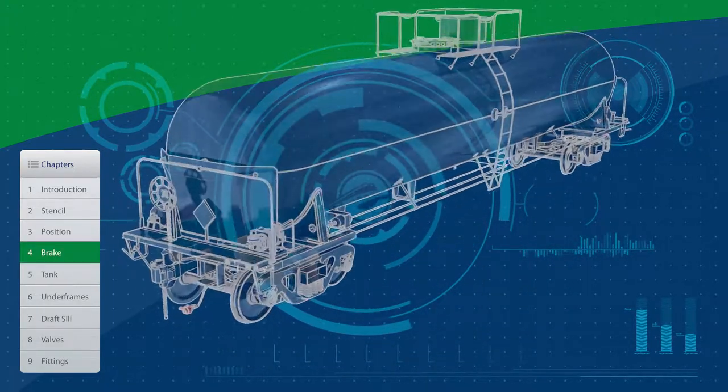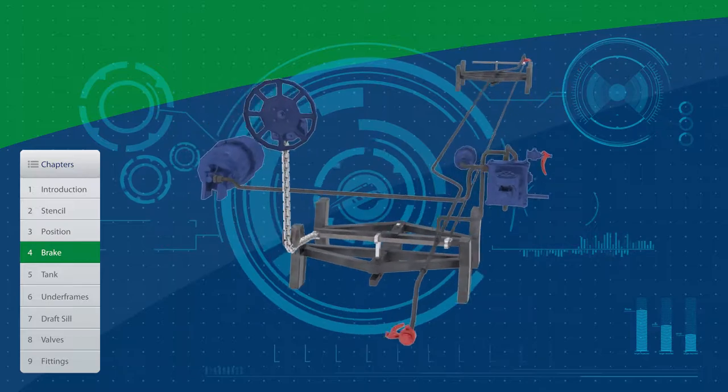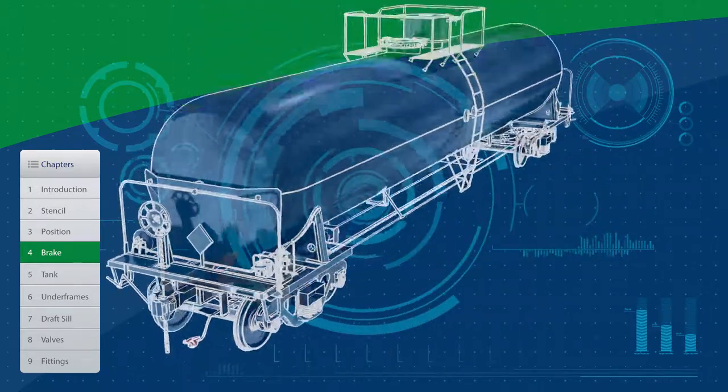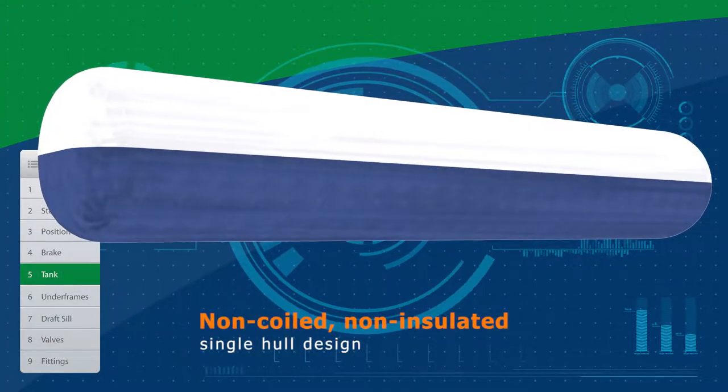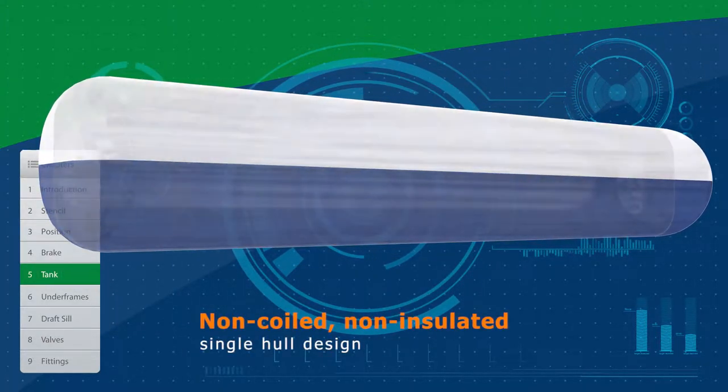The handbrake is a mechanical brake used to secure the tank car when it is not in motion. The tank consists of two heads and a shell. A non-coiled, non-insulated tank car is a single-hole design.